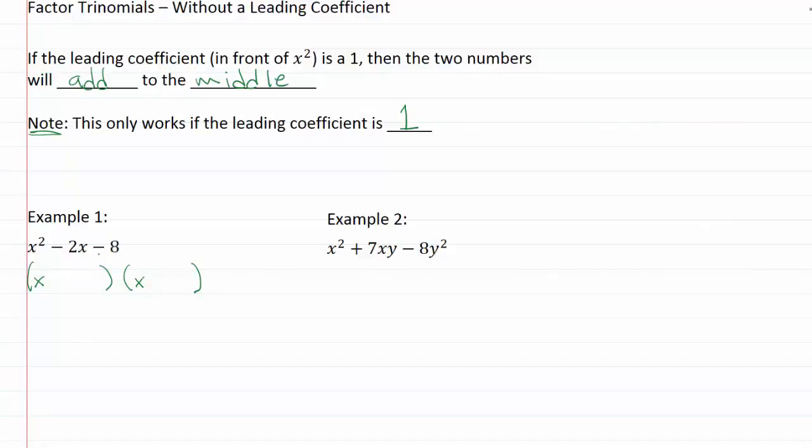And then we also want something that's going to multiply together to give us this negative eight. So we could certainly use our guess and check method here, and we could go ahead and say this is maybe plus one and this is minus eight. But the trick that we're learning in this video is going to tell us a little bit more, since we have this one in front, about what we want these two numbers to do.